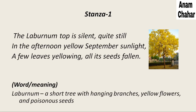As you can see in the picture, this is how a Lebanon tree looks like. It's a short tree with hanging branches, yellow flowers, and poisonous seeds. The Lebanon top is silent, quite still, in the afternoon yellow September sunlight. September signifies autumn season. The tree is lifeless and still — not a single leaf is moving and there is no sound, no movement, no motion.